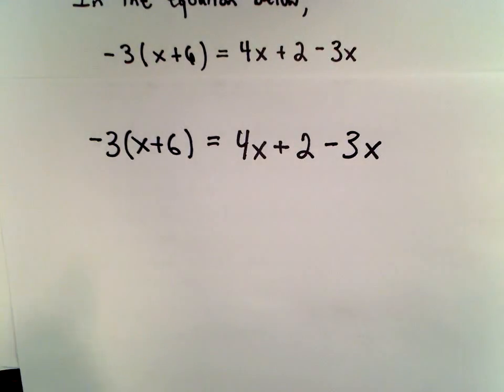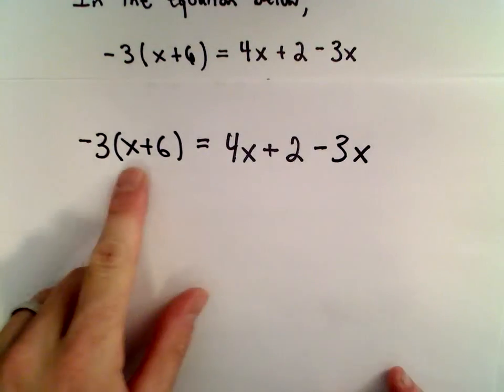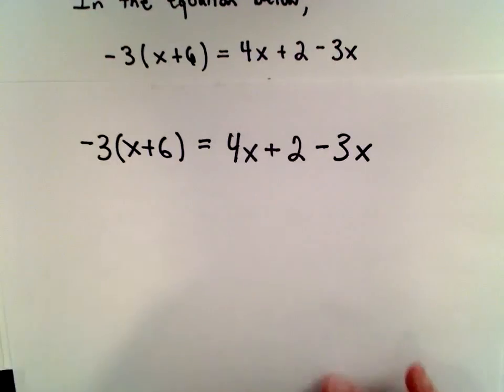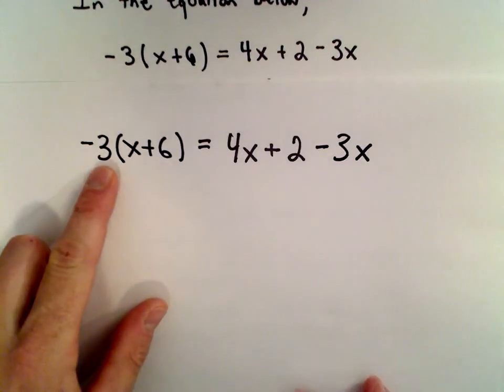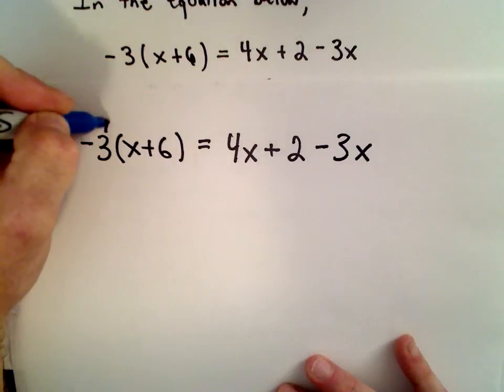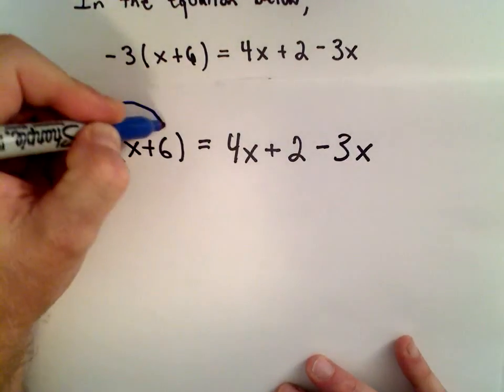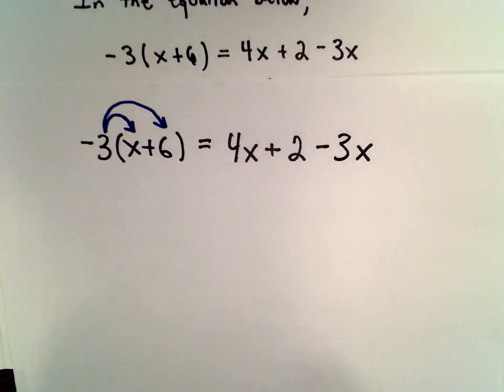The distributive property - we use it when we have some quantity in parentheses and we have some number or some term out front. The idea is we multiply that, in this case the negative 3, to both terms inside the parentheses. That's the distributive property.